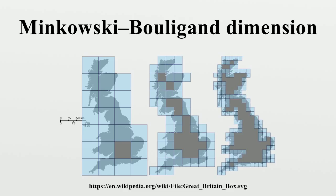Alternative definitions: It is possible to define the box dimensions using balls, with either the covering number or the packing number. The covering number is the minimal number of open balls of radius epsilon required to cover the fractal, such that their union contains the fractal. We can also consider the intrinsic covering number, which is defined the same way but with the additional requirement that the centers of the open balls lie inside the set S. The packing number is the maximal number of disjoint open balls of radius epsilon whose centers lie inside the fractal.